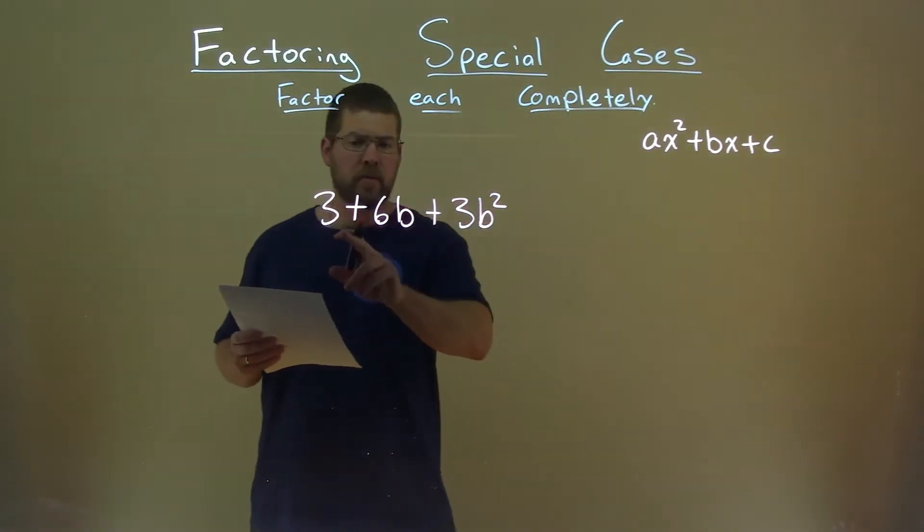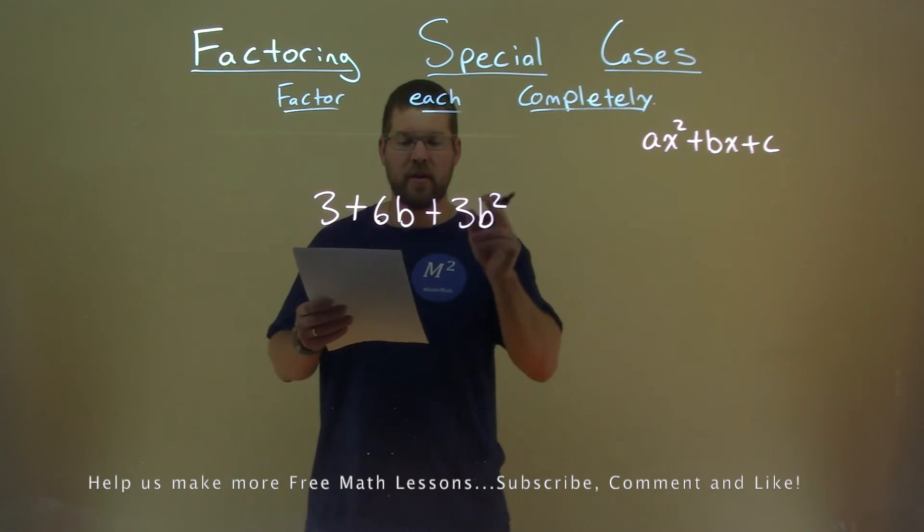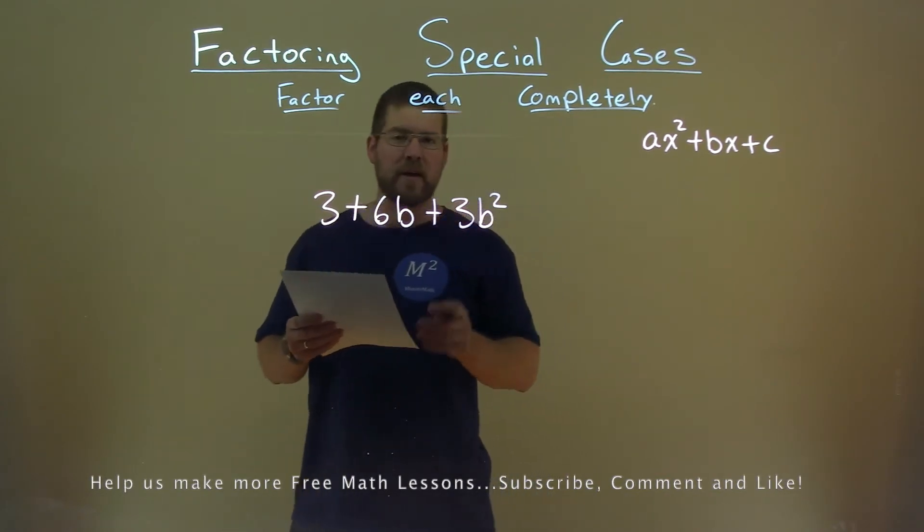We're given this problem right here, 3 plus 6b plus 3b squared, and we need to factor this completely.